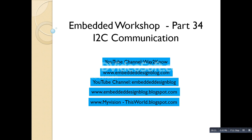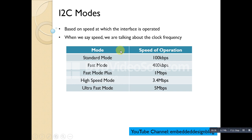First we will talk about I2C modes. Whether it be I2C or SPI, these are synchronous serial communication protocols, so a clock is definitely involved. In SPI, the master generates whatever clock is possible depending on the slave's operating frequency. In I2C it is similar, but I2C has standardized modes of communication that define maximum communication speeds, whereas SPI does not. The standard mode operates up to 100 kbps maximum.